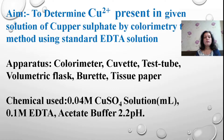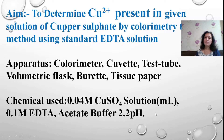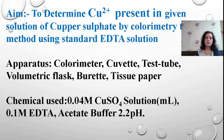To determine the copper present in a given solution of copper sulphate by colorimetric titration, we need an assembly: colorimeter, cuvette, test tube, volumetric flask, burette, tissue paper, and chemicals — 0.04 molar copper sulphate solution, 0.1 molar EDTA, and sodium acetate buffer. The buffer is prepared fresh using acetic acid and sodium acetate solution as 20 plus 3 ml to form the sodium acetate buffer.